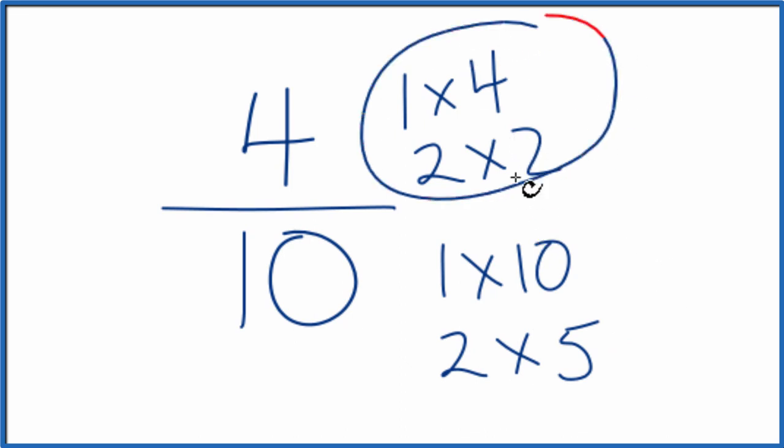So when we look at these here, we have our numerator, here's our denominator. The only common factor, or the greatest common factor, that's 2.